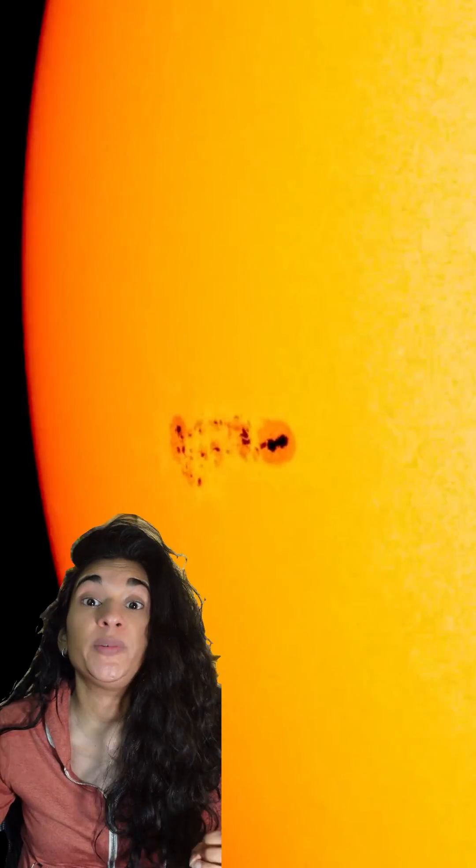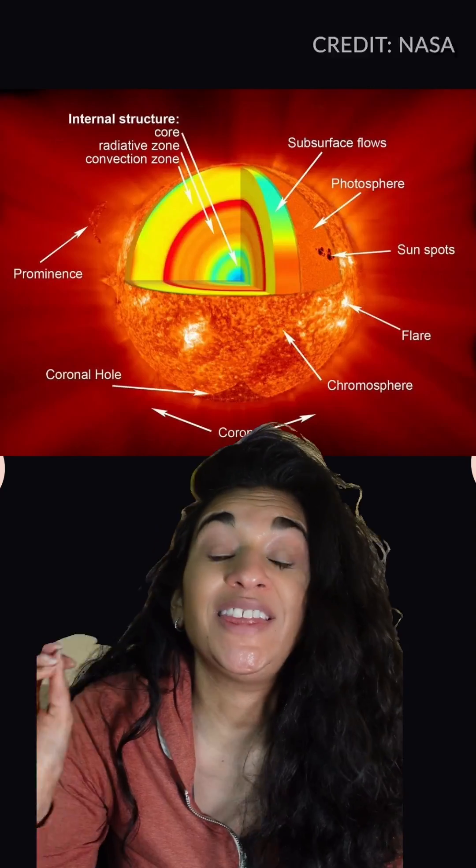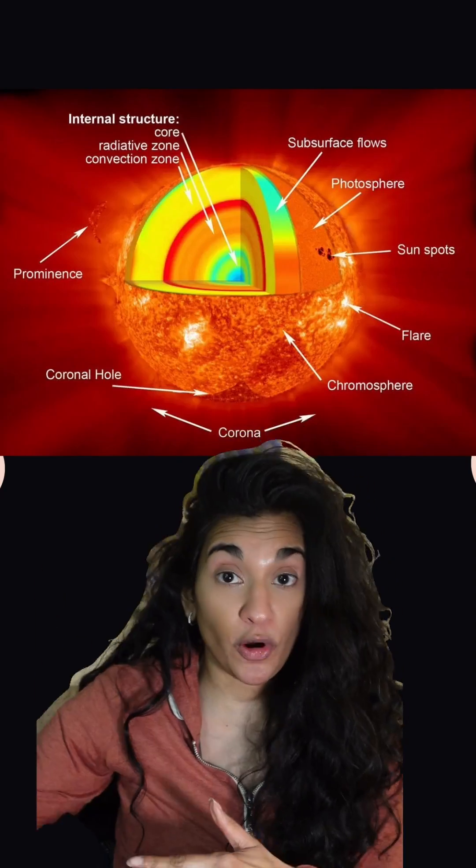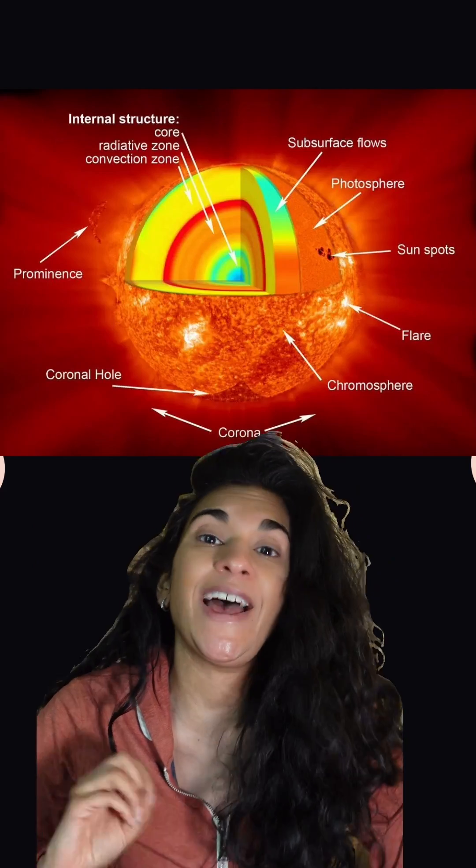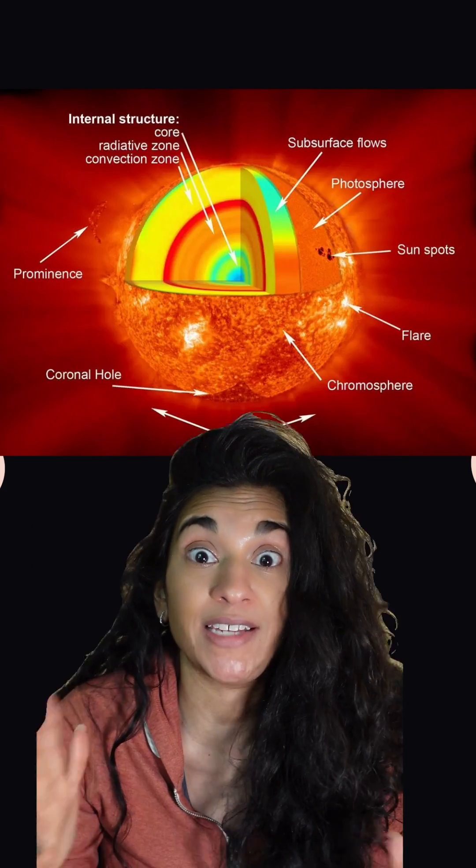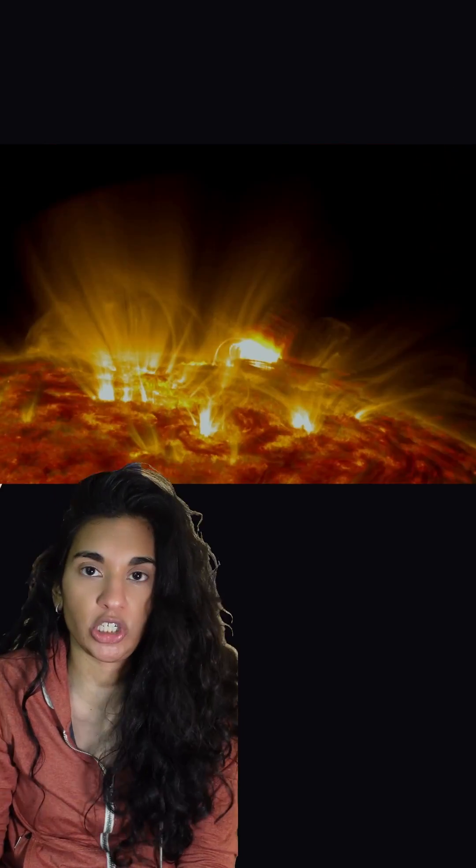We do know that when they occur, it's due to magnetic field lines forming loops that hold plasma from the Sun's chromosphere. The chromosphere is a thin layer of plasma between the photosphere, which is the Sun's visible surface, and the corona, which is the Sun's upper atmosphere. These magnetic field lines hold the cooler plasma in these arch structures.